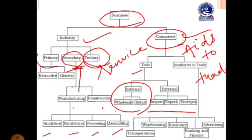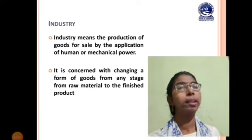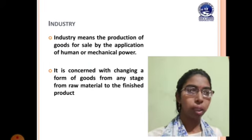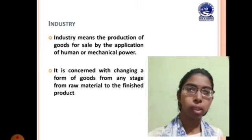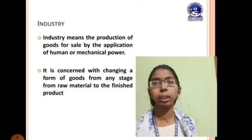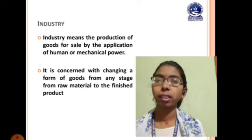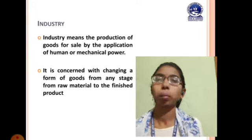In today's class we are going to discuss the primary and secondary industries and the different activities performed within them. Industry means the production of goods for sale by the application of human and mechanical power. Industry is the place where actual production is happening, whereas commerce refers to the exchange of goods once they are produced.